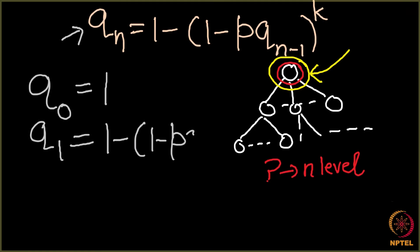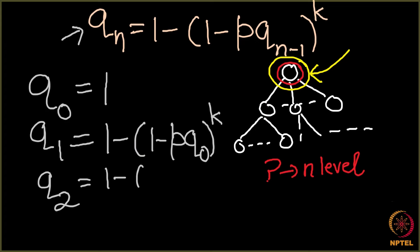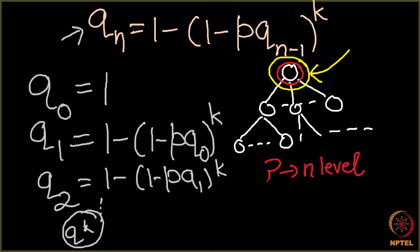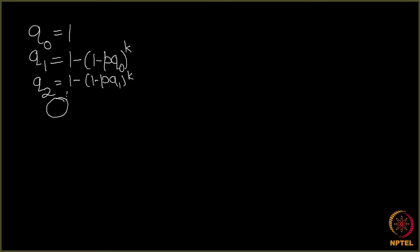Finding q1 is easy: plug into the formula — q1 = 1 - (1 - p·q0)^k. Then q2 = 1 - (1 - p·q1)^k. Our aim is to find q*, which comes from repeating this formula. From q0 we find q1, from q1 we find q2, and we repeat this process infinitely many times to find q*.